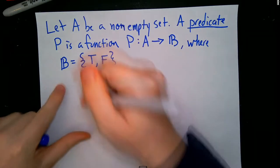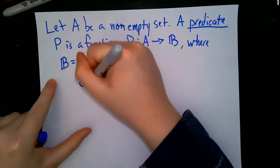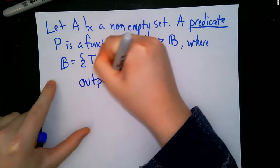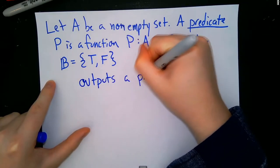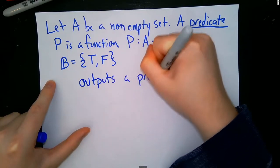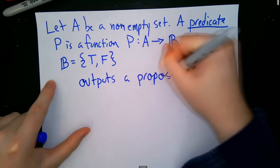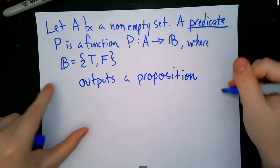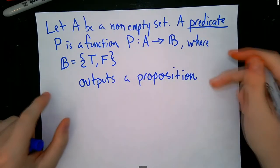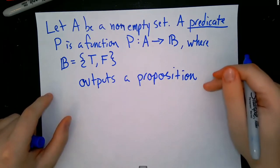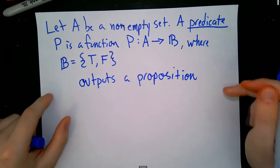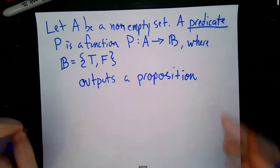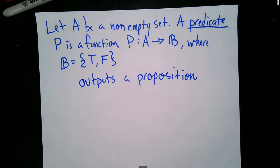What this means is that a predicate outputs a proposition. Another way we can think of a predicate is as an open statement whose truth value is dependent on a variable subject.